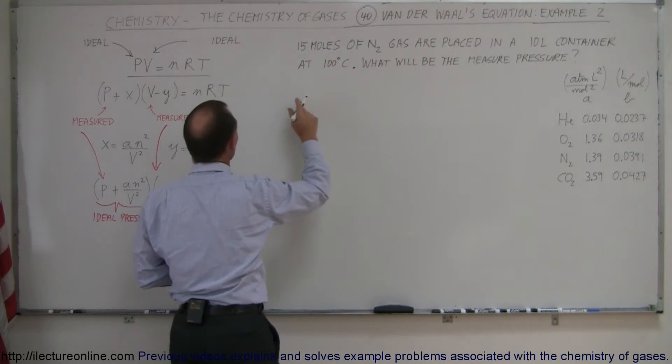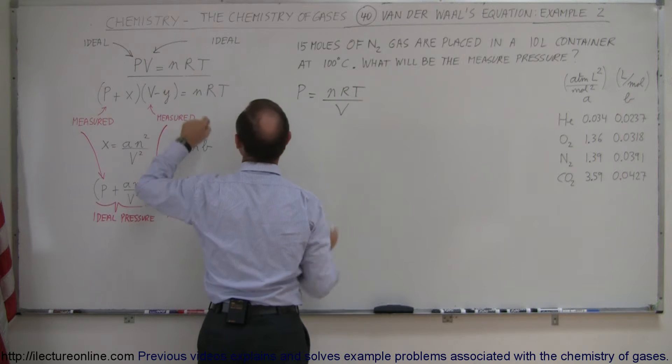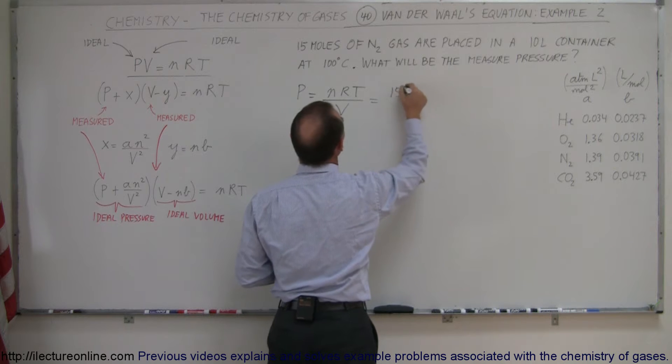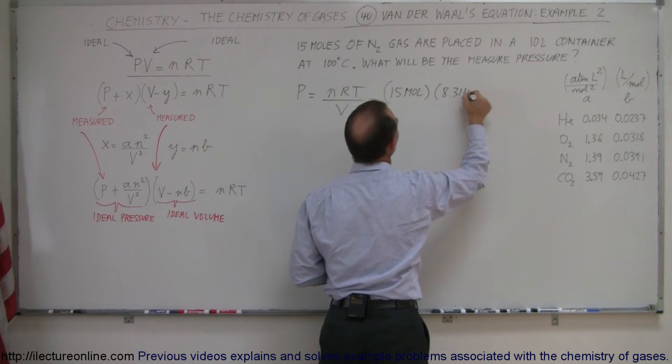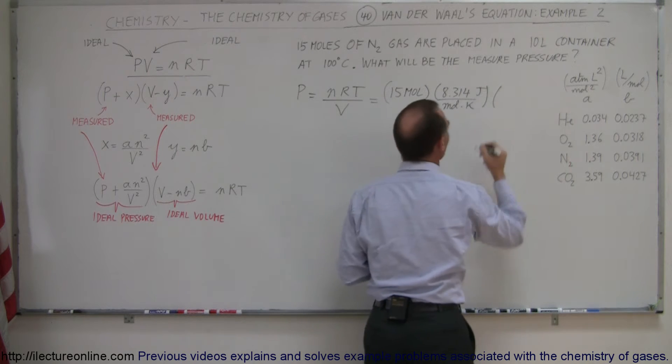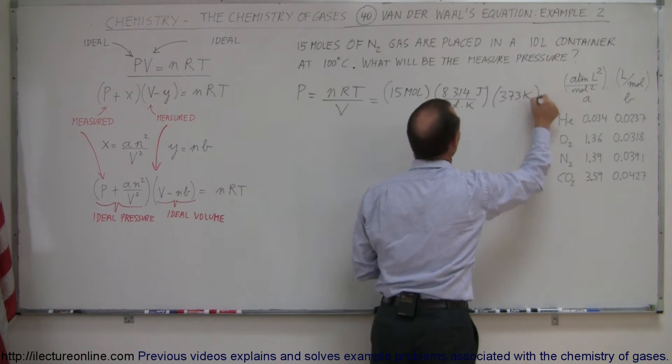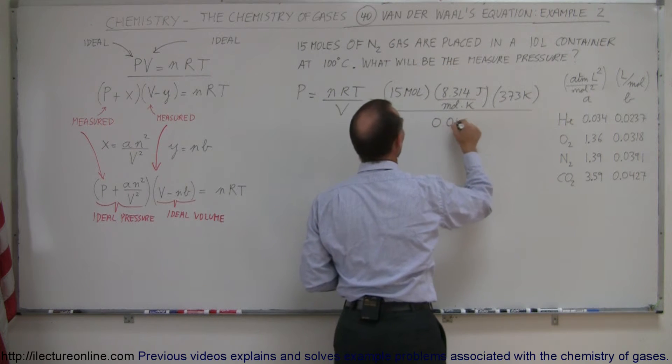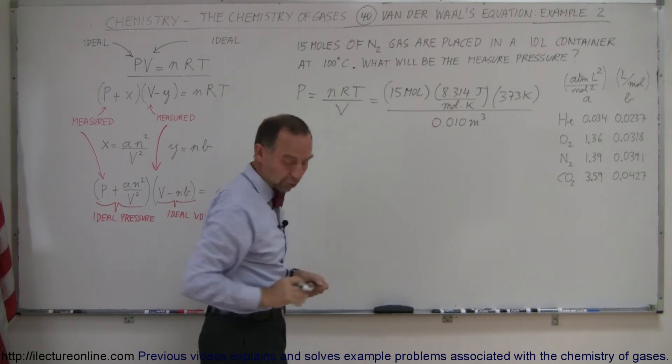Using the ideal gas equation, we can say that the pressure is equal to nRT divided by the volume. And if we plug in the numbers, we have 15 moles of gas and we multiply times the constant, which is 8.314 joules per mole times Kelvin, times the temperature, 100 degrees centigrade. We add that to 273, we get 373 Kelvin. And then we divide the whole thing by the volume, we have a 10-liter container, so that would be 0.010 meters cubed. Remember that there's a thousand liters that fit into a cubic meter, and I'm using standard units here.